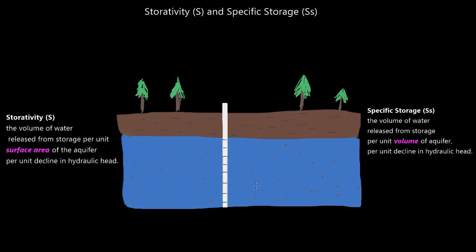Let's look at Specific Storage. The volume of water released from storage per unit volume of our aquifer — here's our unit volume, and let's give it a unit of one meter, because everyone's been giving me grief about using Imperial lately. Let's give a shout out to our international fans and use meters. So we have one cubic meter of our aquifer system. How much water is going to come out of this cubic meter if we lower the hydraulic head in this aquifer one meter?